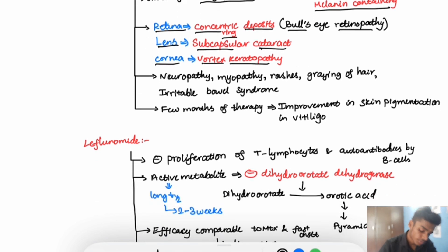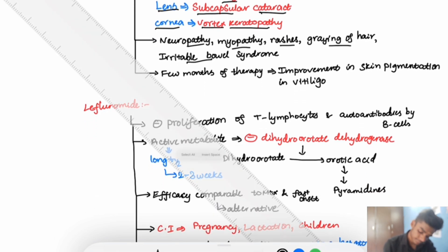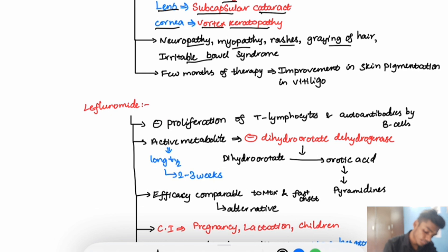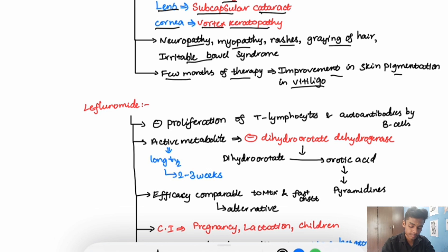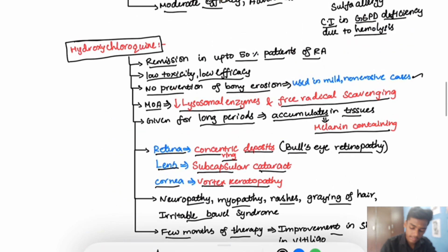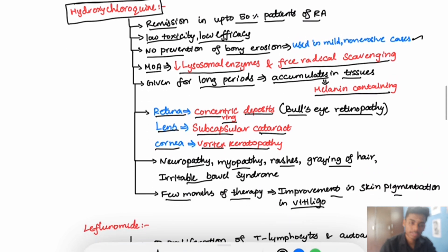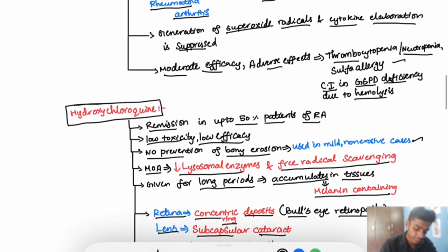Other adverse effects of hydroxychloroquine are neuropathy, myopathy, rashes, graying of hair, and irritable bowel syndrome. It has been seen that in a few months of therapy, there is improvement in skin pigmentation in vitiligo — but it is not primarily used for this purpose.